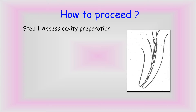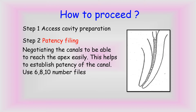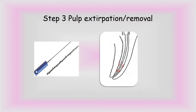Now, how to proceed? The first step is access cavity preparation. The next step is patency filing — negotiating the canals to reach the apex easily, which helps to establish the patency of the canal. For this, we use 6, 8, and 10 number files. The next step is pulp extirpation or removal using barbed broaches. We insert the broach inside the canal, rotate it, and pull it out to remove the pulp present inside the canal.